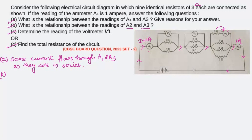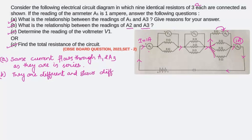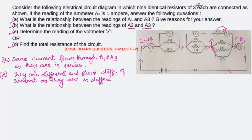For the relationship between A2 and A3: A2 is connected near a resistance of 3 ohm and is part of the branched circuit. So A2 will have a different value of current than A3, which shows a reading of 1 ampere. They are different, showing different values of current as they are in different branches.